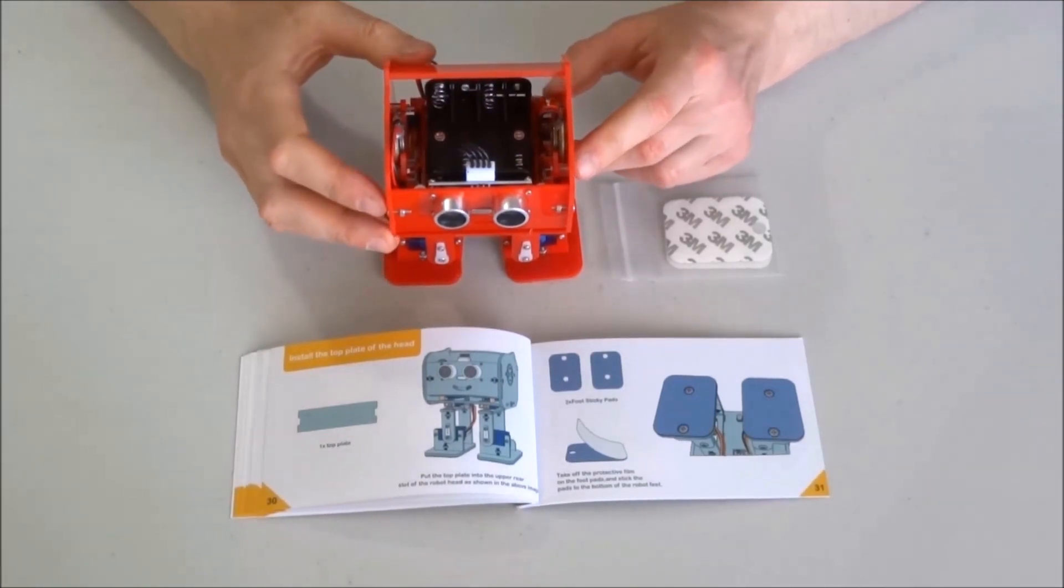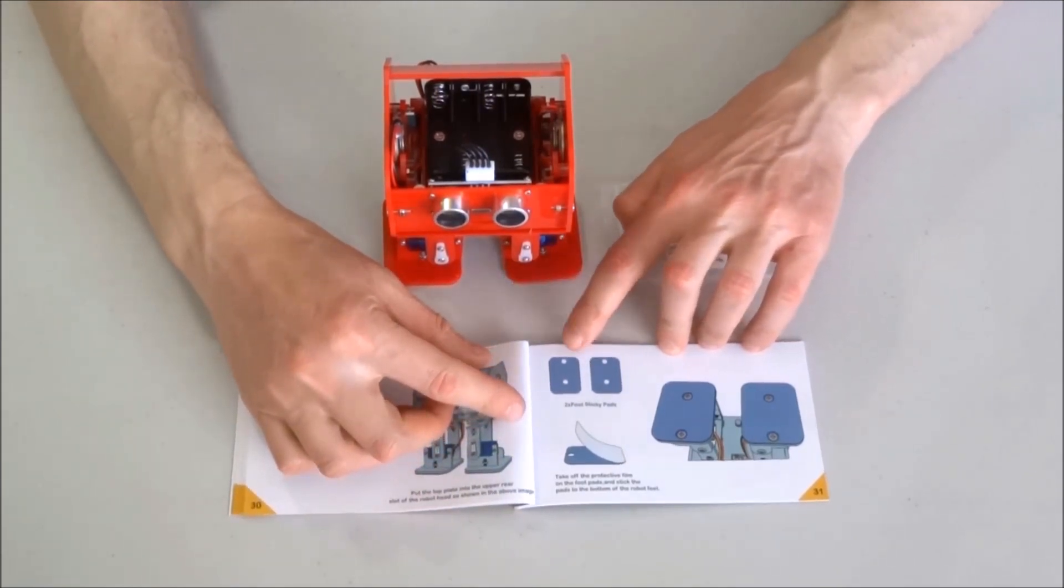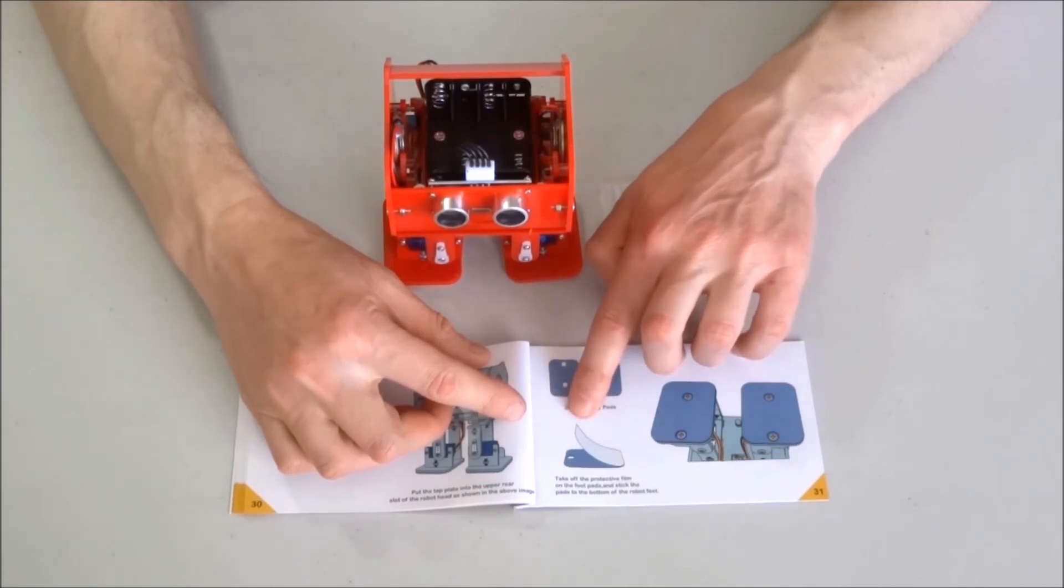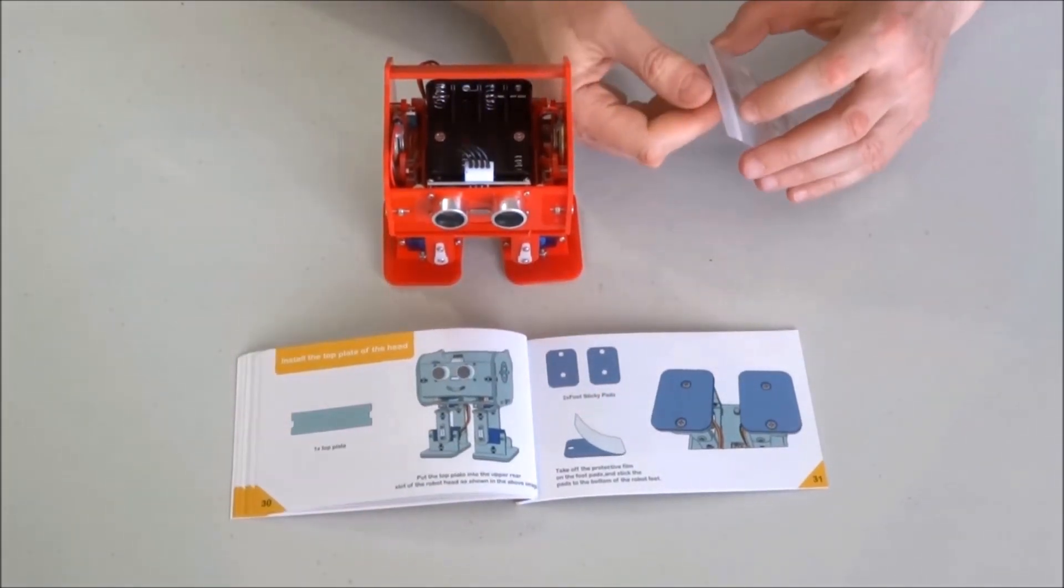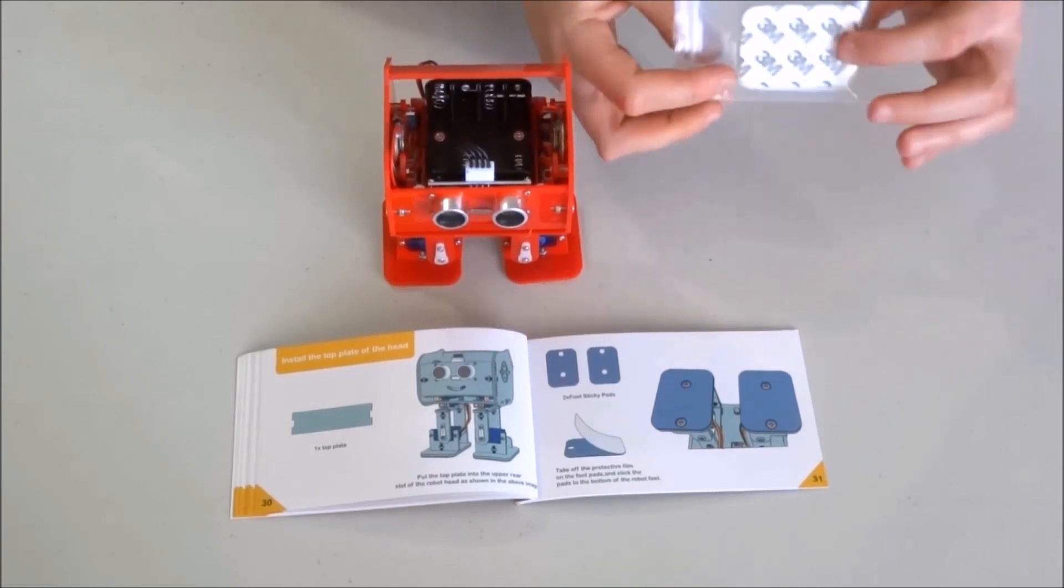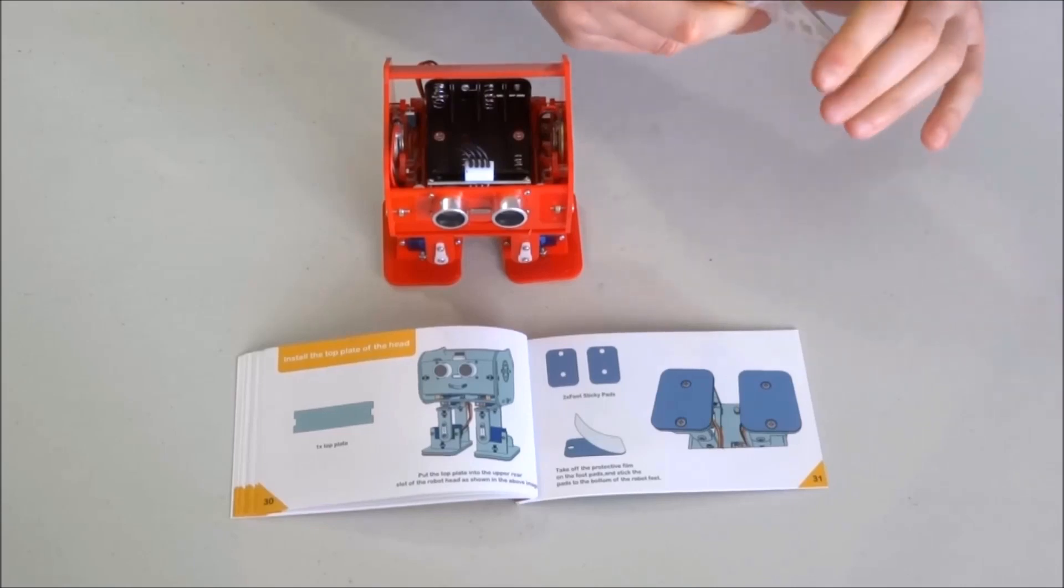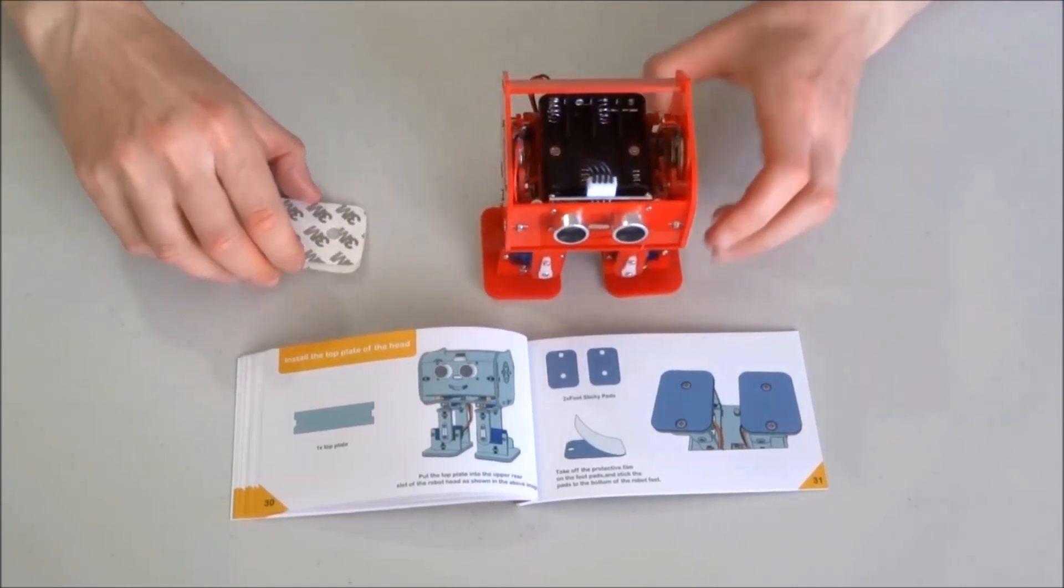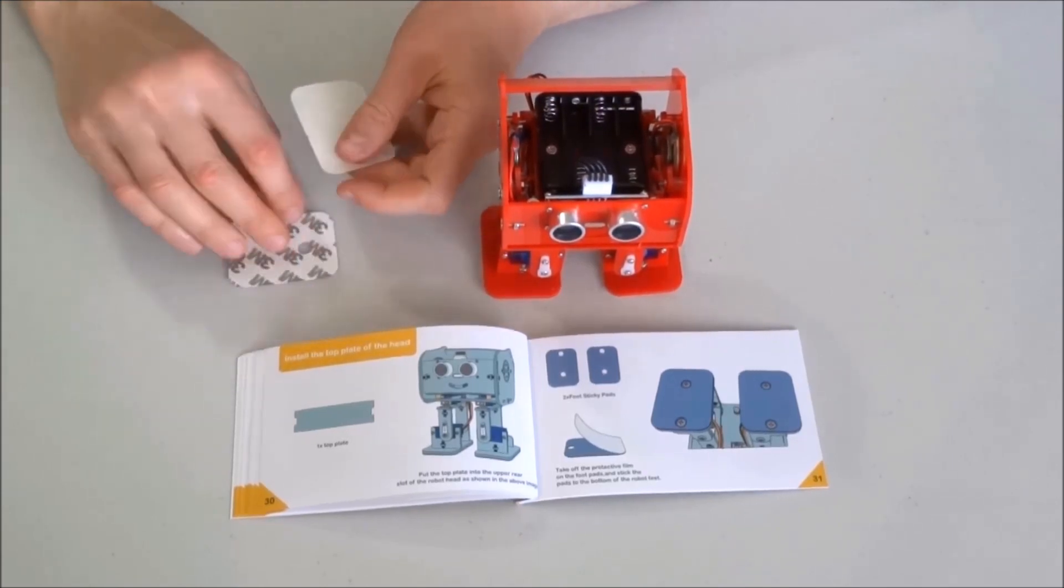To have some cushioning when the robot walks or dances, the kit includes some sticky cushioning pads for the feet. They are in this plastic bag. I will take them out and take one of them.